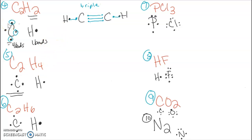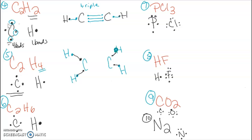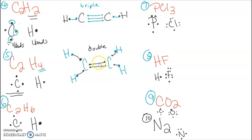For C₂H₄, the carbons are again in the middle, but now we have four hydrogens — two to each carbon. Each hydrogen still shares one electron, and each carbon shares one with each of its two hydrogens. We've used two of the four electrons for carbon, so the other two go in the center — creating a double bond between the two carbons. Each carbon still has two, four, six, eight electrons, meets octet, and has four bonds following the HONK rule. So we went from a triple bond with one hydrogen to a double bond with two.